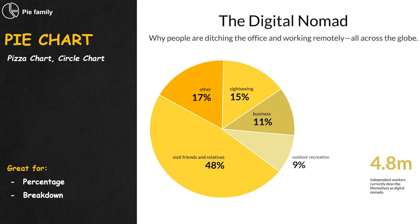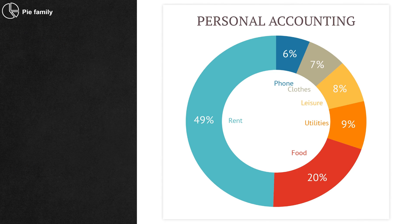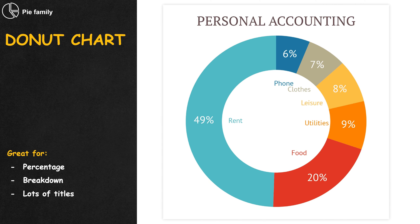Even though the pie chart takes so much space for the little value it represents, and there are many better alternatives, people seem to like it somehow. When people punch a big hole in the middle of the pie to use for text, labels, and legends, the pie becomes a donut chart.